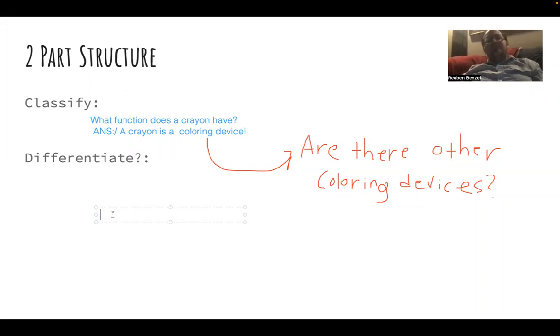So when we do that, we might say that a crayon is made of wax and is a coloring device, and this would be a more precise definition.